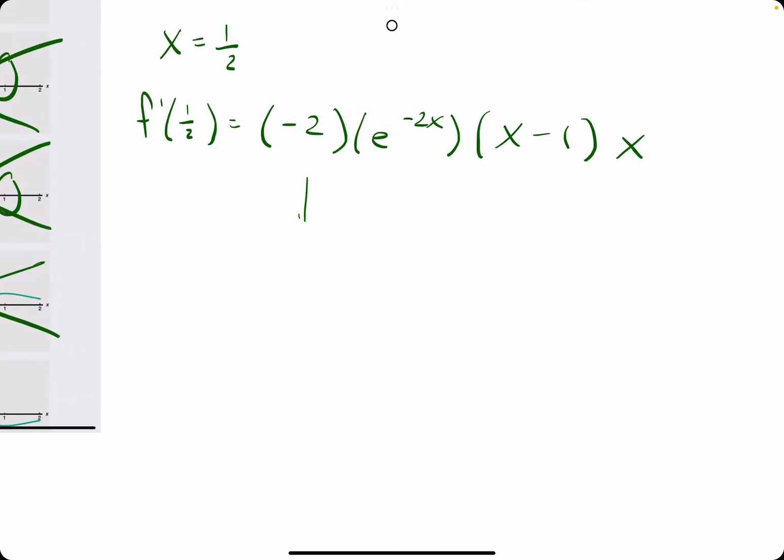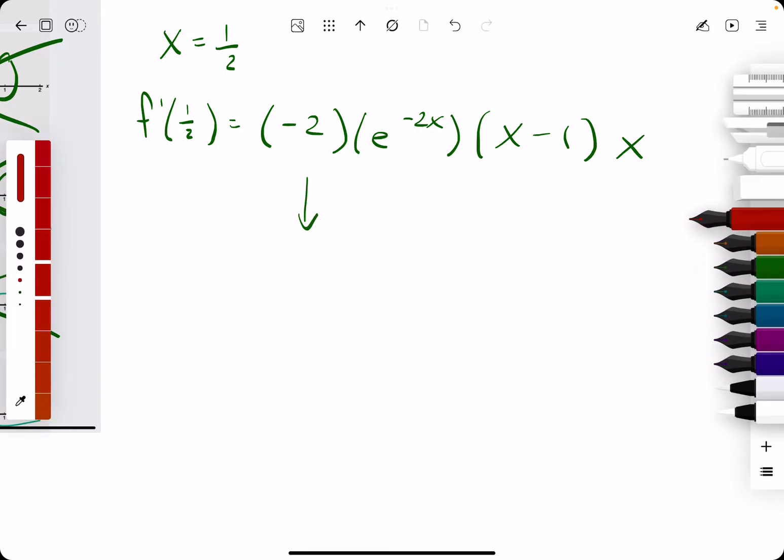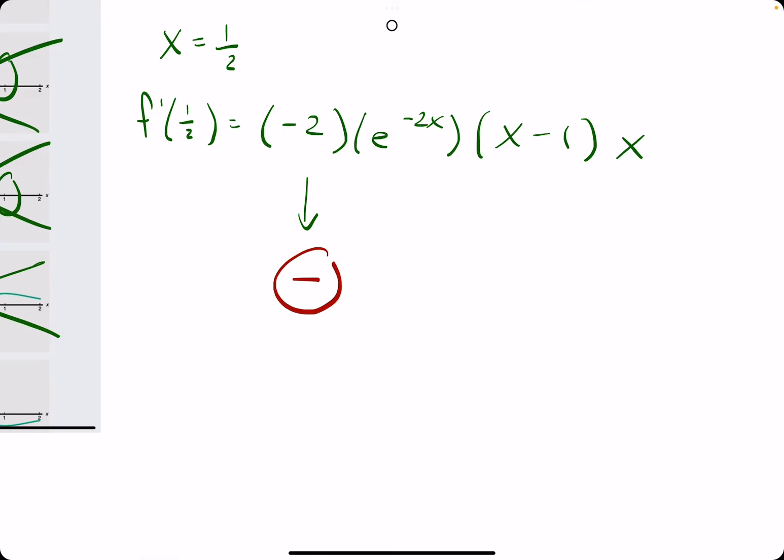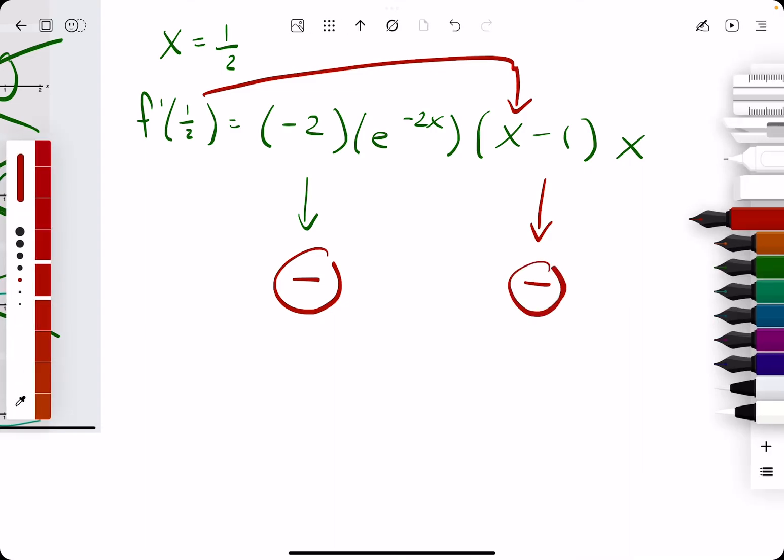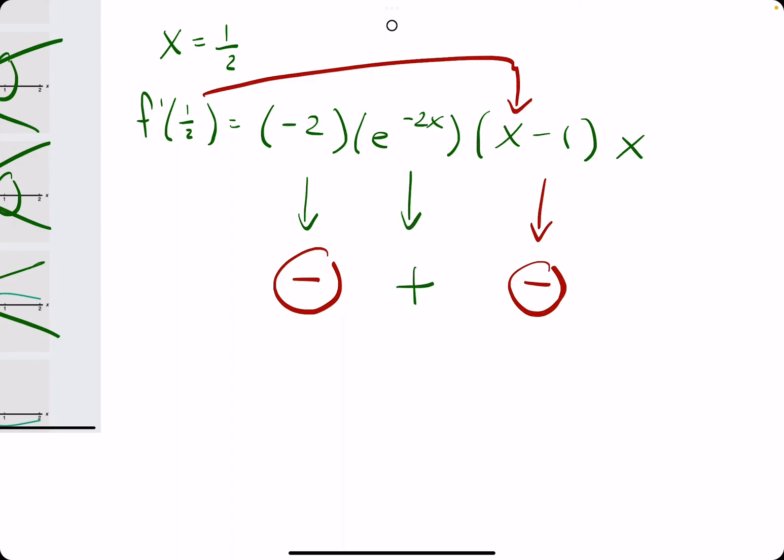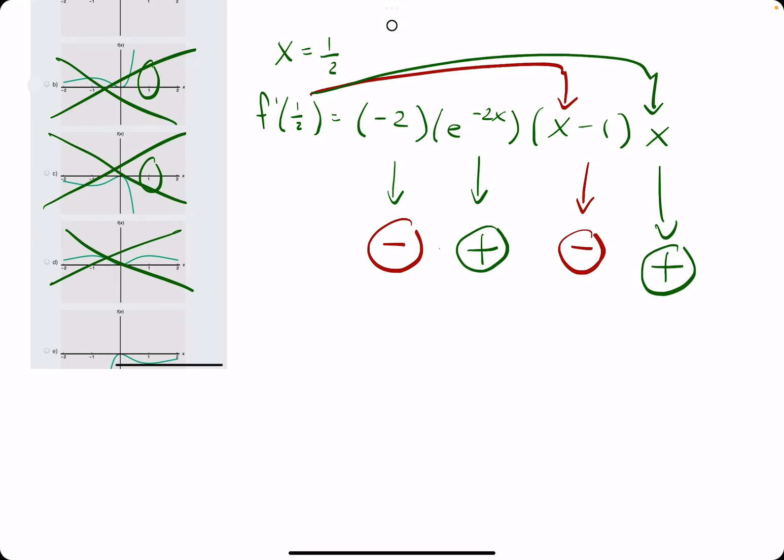So analyzing the signs here. We have a negative. If we plug in 1 half to x minus 1, we'll have 1 half minus 1, which will also result in a negative. And then, like we said, e is always positive. And x, if we are plugging in 1 half, 1 half is positive. So we have two negatives, two positives being multiplied. An even number of negatives will lead to a positive. So really, we have positive times positive times positive, and that will give us a positive.